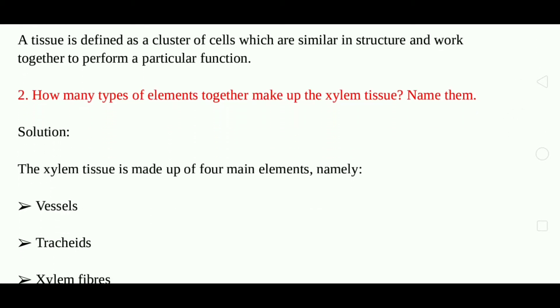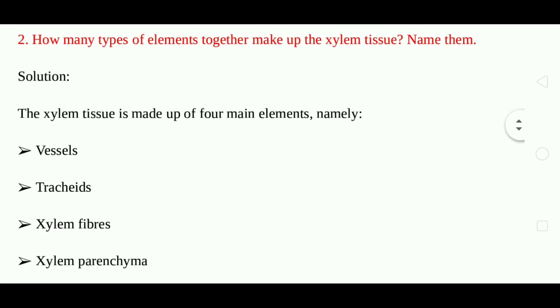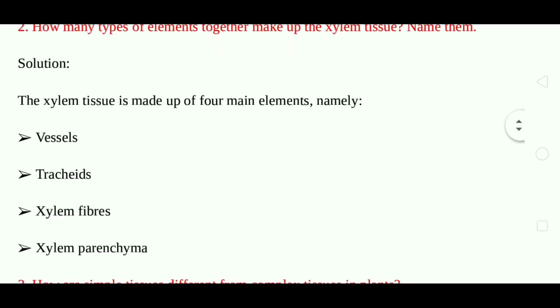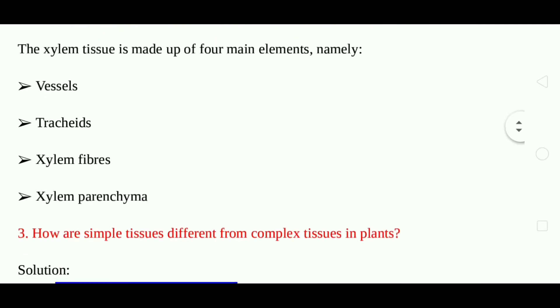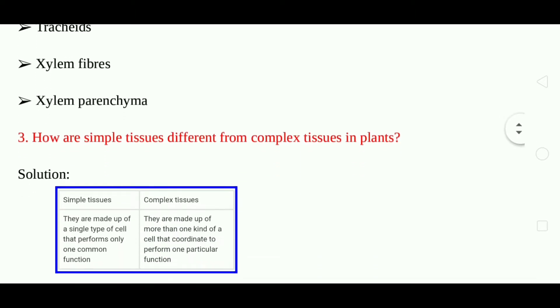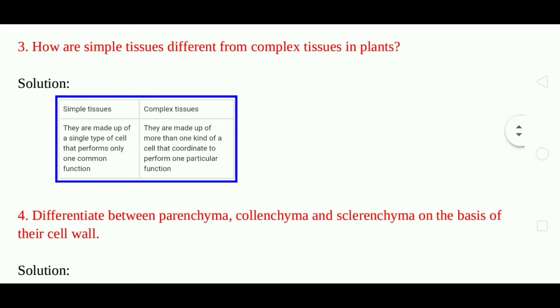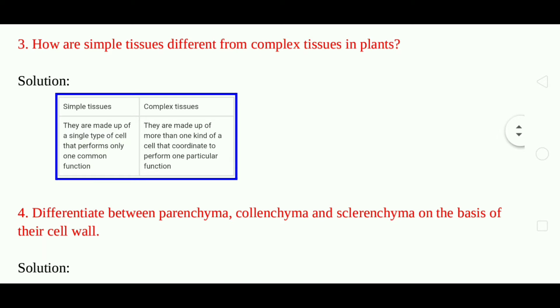Question 2: How many types of elements together make up the xylem tissue? Name them. Answer: The xylem tissue is made up of 4 main elements, namely vessels, tracheids, xylem fiber, and xylem parenchyma.